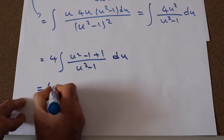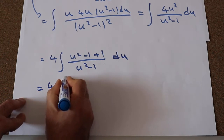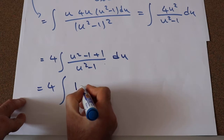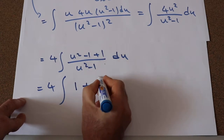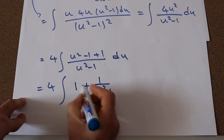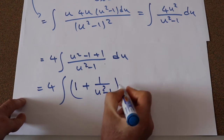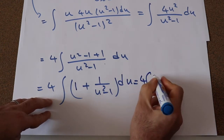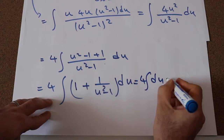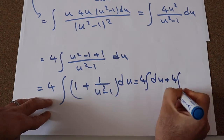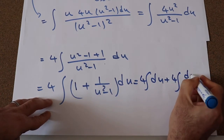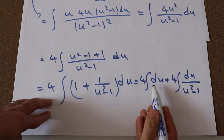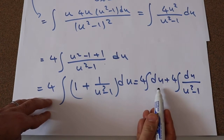This one will be equal to 4 times the integral of (u squared minus 1) divided by (u squared minus 1), which equals 1, plus 1 divided by (u squared minus 1), du. So this integral will be equal to 4 times the integral of du — the first term — plus 4 times the integral of du divided by (u squared minus 1). The integral of du is simply u.